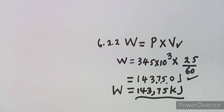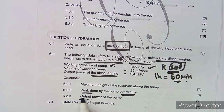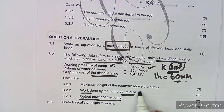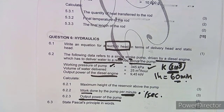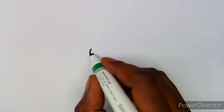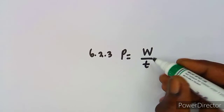The next question asks us to calculate the output power of the pump. Since the work done was calculated per minute, it does not directly give us power. Power requires work done per second. You can either redo the calculation per second, or take the work done already calculated and divide by time in seconds. Remember: power equals work done divided by time in seconds.